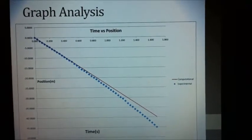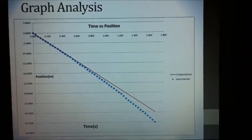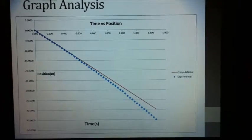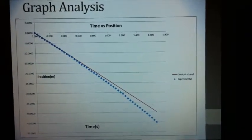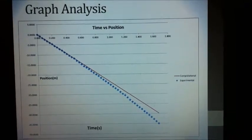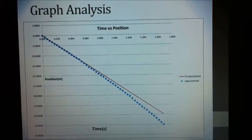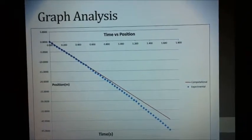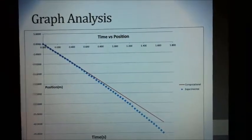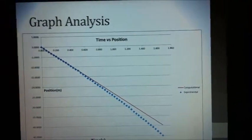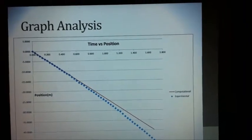Now putting the two together, I created a position versus time graph, using the computational model data and the experimental data I found using Tracker. The experimental value is in blue and the computational model data is in red. And as you can see, the computational model has a constant slope, meaning it has constant velocity, while the experimental value has a slope where it is curving downward. This means that towards the end of the video, the car was actually speeding up.